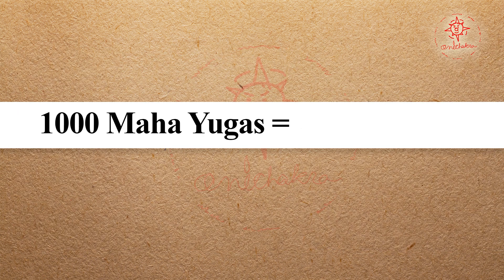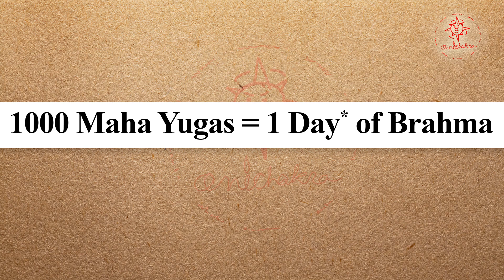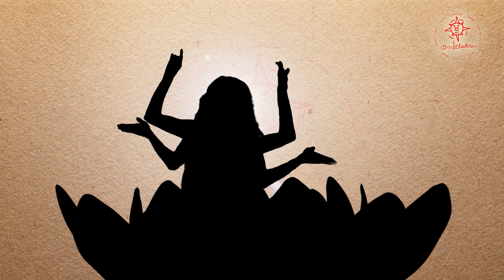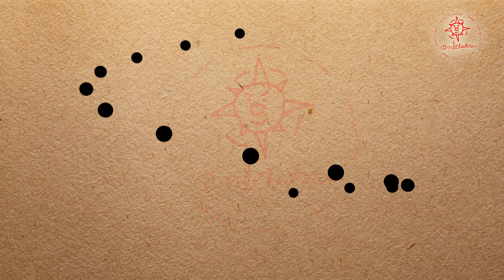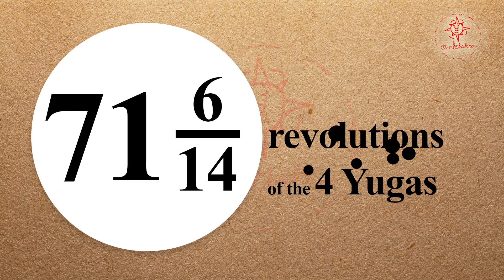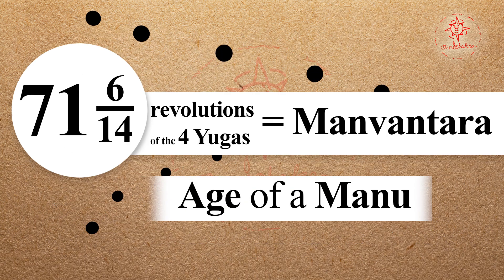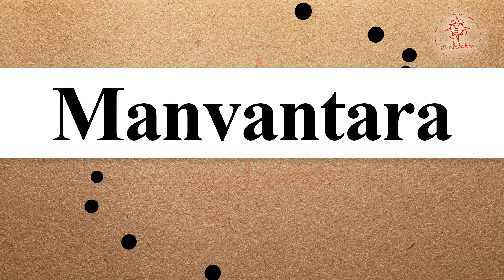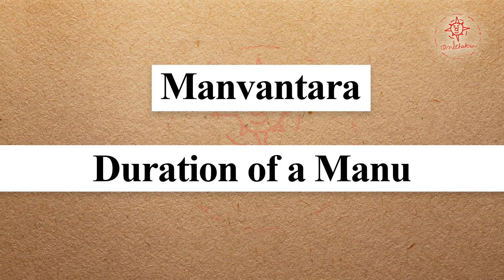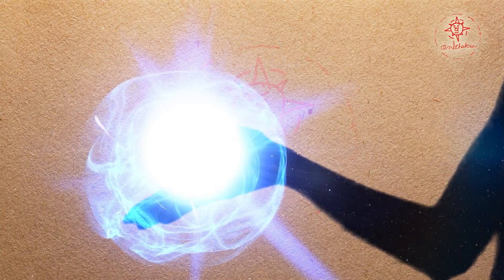One thousand revolutions of the Mahayugas constitute a day of Brahma, and equal in length is his night. When Brahma, the creator of the universe, goes to sleep, he withdraws all three worlds into his belly. At the close of night, creation of the three worlds commences again as in the preceding Kalpa, and continues for the lifelong day of Brahma. This day embraces the reign of 14 Manus, each holding power for the period allotted to him — a little over 71 revolutions of the four Yugas. This time period is called a Manuantara, meaning the duration or life span of a Manu.